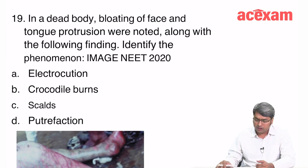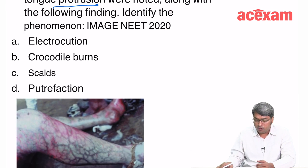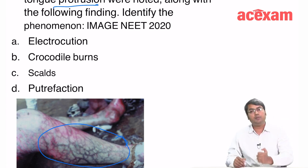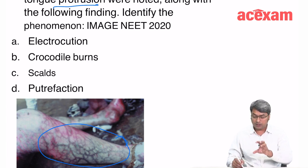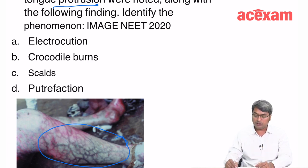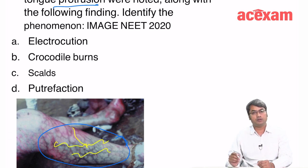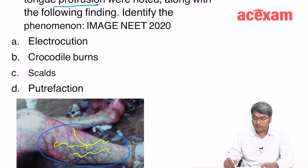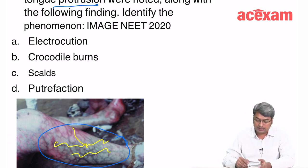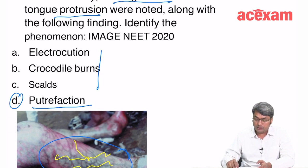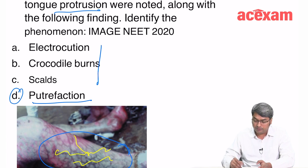A dead body with bloating of face, tongue protrusion, and a branching greenish pattern in an image — this is marbling (putrefaction). Whatever marbling image is shown, identify the branching pattern following the blood vasculature. This is not seen in electrocution, crocodile burns, or scales. In marbling, the branching always follows the vasculature.